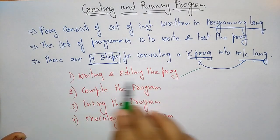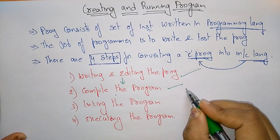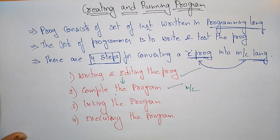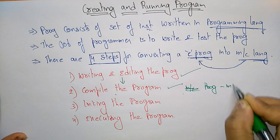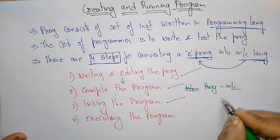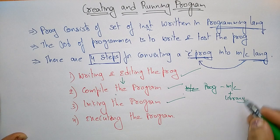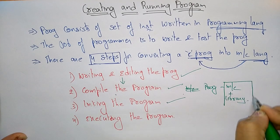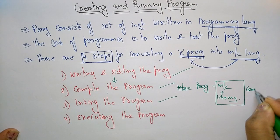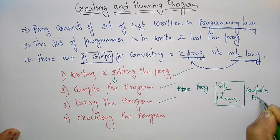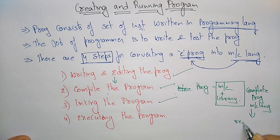The programming language source is compiled, converting it to machine language. After compilation, the complete program is in machine language. Linking then adds the necessary library functions. This machine-level program combined with the library functions forms the complete program in machine language, and after that it is ready for execution.